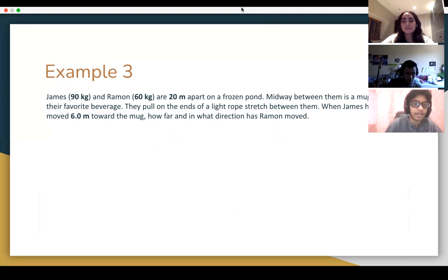And for the last problem, we have James who's 90 kilograms and Ramon who's 60 kilograms. They're 20 meters apart on a frozen pond. And 10 meters between them is a mug of their favorite beverage. So they use a rope and they pull on the ends of it. When James has moved 6 meters towards the rug, how far and what direction has Ramon moved?